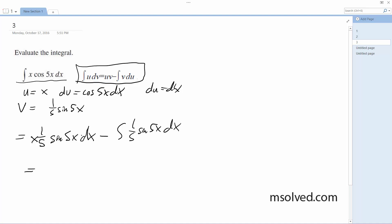This is equal to 1/5 x sine of 5x plus 1 over 25 cosine of 5x plus c. That's it. Thank you.